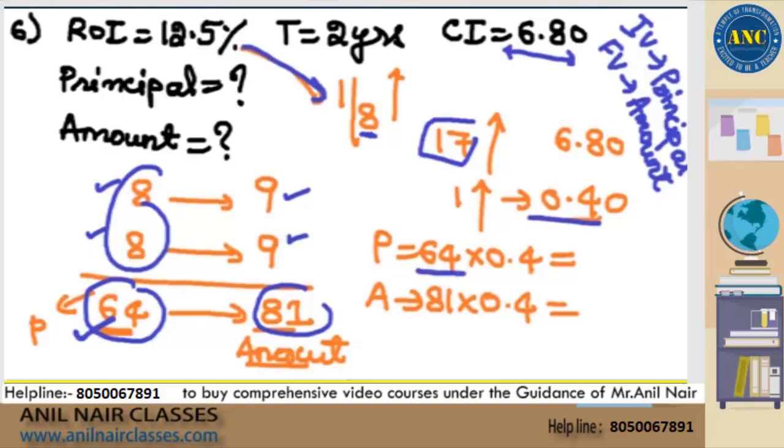So initially it is 64, 64 into 0.4, 81 into 0.4. 17 increase, 64 is becoming 81, so increase is 17. This increase is nothing but CI. 17 increase is 6.8, 1 increase is 0.4. Principal is 64 into 0.4, amount is 81 into 0.4.